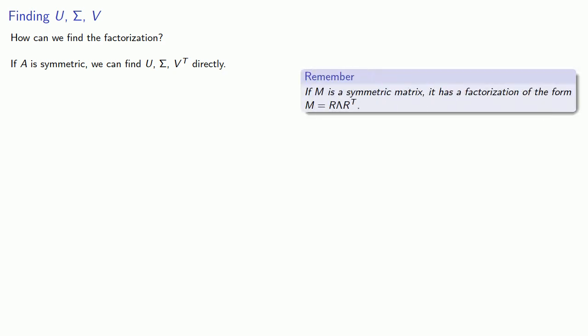How can we find the factorization? If A is symmetric, we can find U, Σ, and V^T directly. Because if M is a symmetric matrix, then we can write M as R λ R^T.